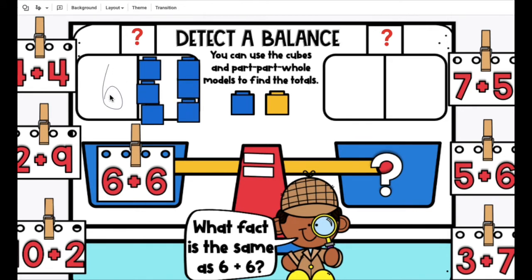Let's say the part we know and count up. 6, 7, 8, 9, 10, 11, 12. What's the whole number? 12.